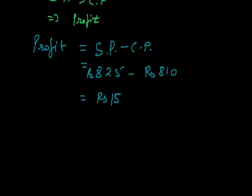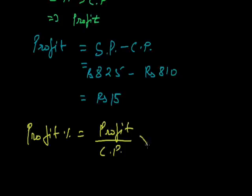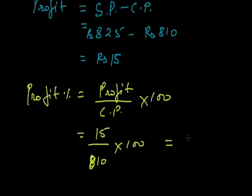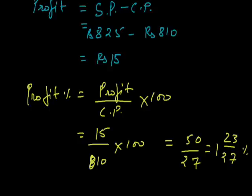Now we calculate the profit percent. Profit percent = profit upon cost price into 100 = Rs. 15 upon Rs. 810 into 100 = 50 upon 27, which as a mixed fraction is 1 and 23/27 percent. This was the grocer's profit percent. In the next session we will see some more examples based on profit and loss percent.